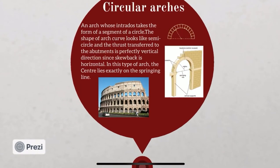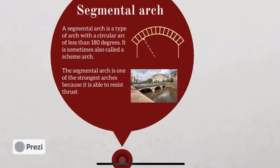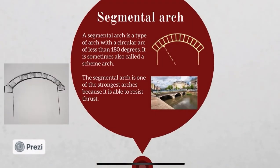Coming into circular arches — a circular arch is an arch whose intrados takes the form of a segment of a circle. In this type of arch, the center lies exactly on the springline. Talking about the segmental arch, it is a type of arch with a circular arc of less than 180 degrees, sometimes also called a scheme arc. The segmental arch is one of the strongest arches because of its ability to resist thrust.